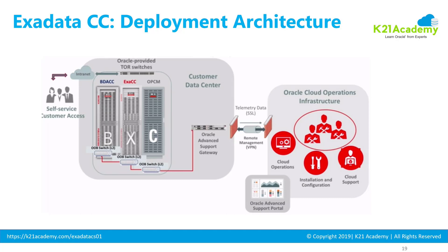Oracle's cloud operations team also remotely connects via VPN through the Advanced Support Gateway to perform hardware maintenance — such as patching the hardware or firmware of Exadata Cloud Service — and to manage and maintain the Exadata from a Dom0 perspective. DomU, as covered in a previous video, is still managed by you as the customer or Exadata admin.